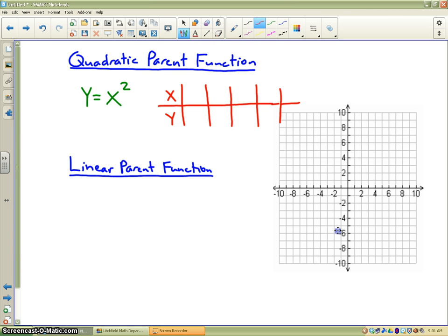When you graph a quadratic equation, it is important to always graph 5 points. Because the graph is a parabola and it makes a U shape, it is very important to have 5 points.